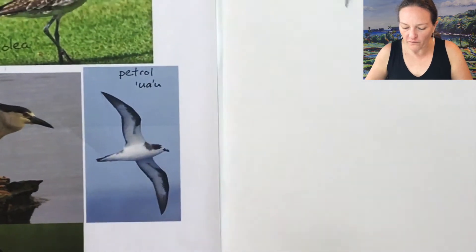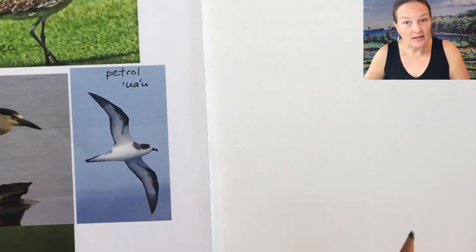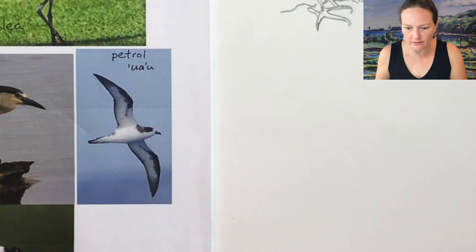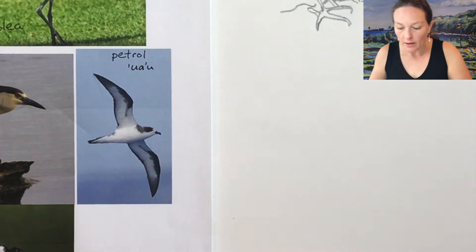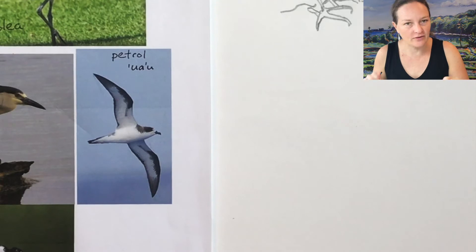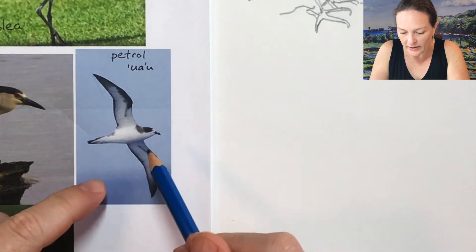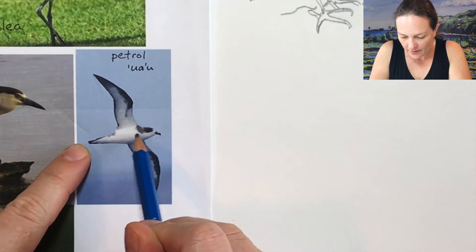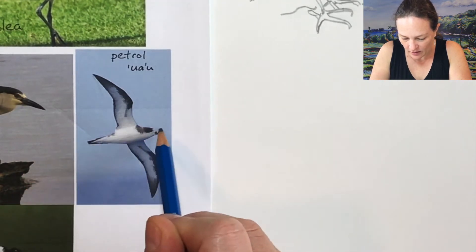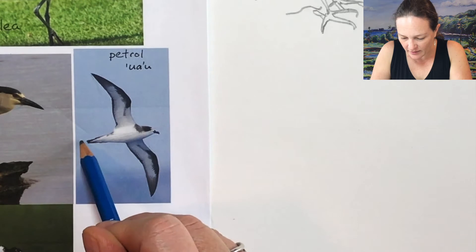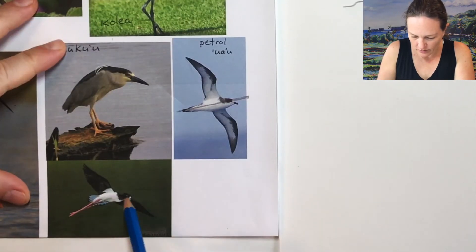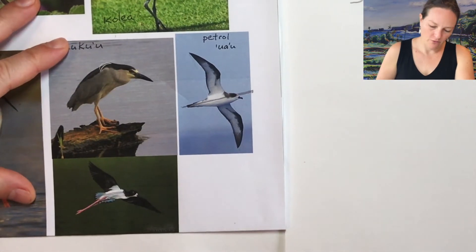How about if birds are flying? Let's look at just a couple examples of that in case you want to draw a bird that's not sitting around but flying. So for birds that are flying, there are a couple things you can look for. One is the eye and the tail are generally right in line — this one too, eye and tail right in line.